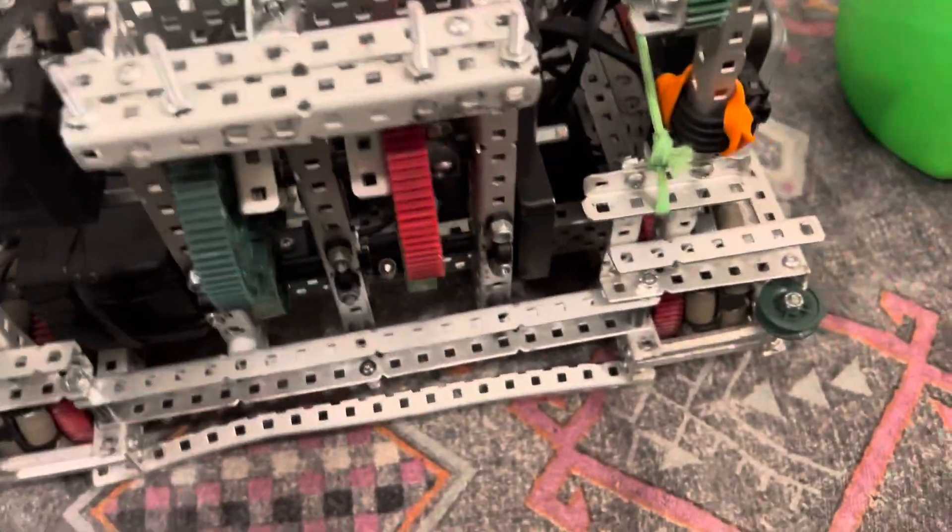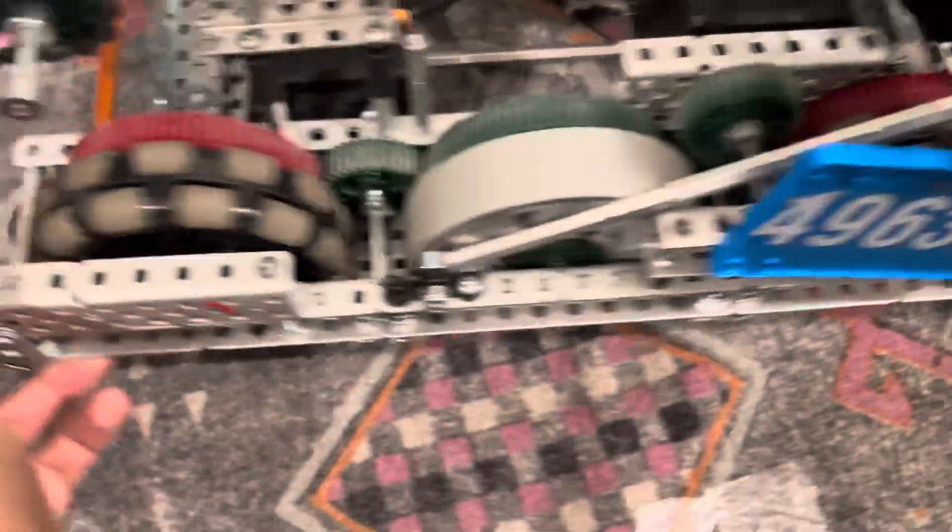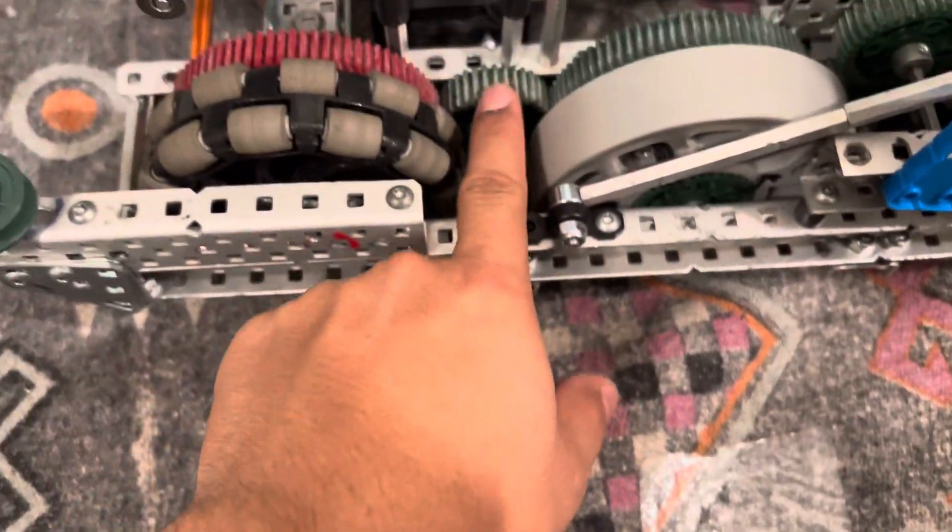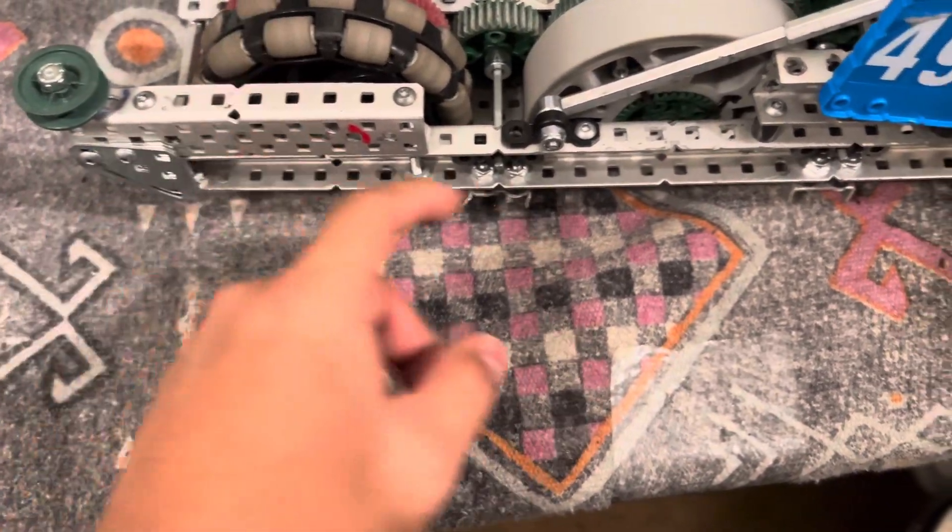So first, we have the 6-motor base. It is 257 RPM on 36 to 84 on 4.125 inch omniwheels.